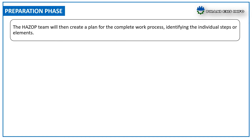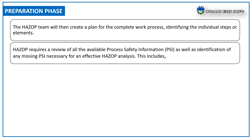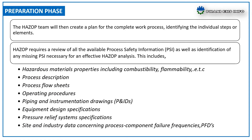Identifying the individual steps or elements, HAZOP requires a review of all available process safety information as well as identification of any missing process safety information necessary for an effective hazard analysis. This includes hazardous material properties such as combustibility, flammability, explosivity, reactivity, self-heating, toxicity, and electrostatic properties, as well as the process description and process flow sheets.